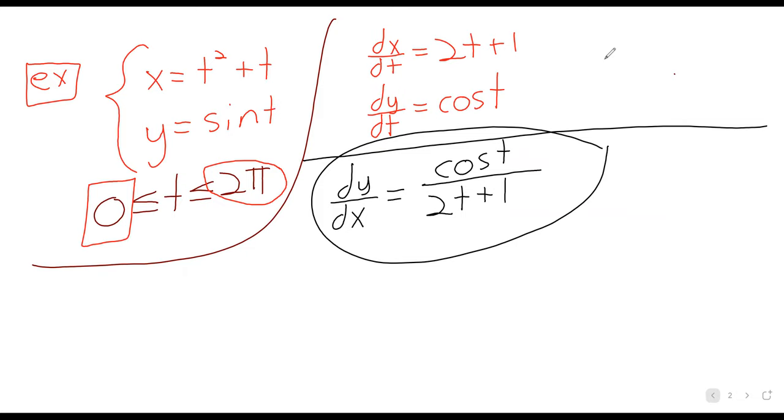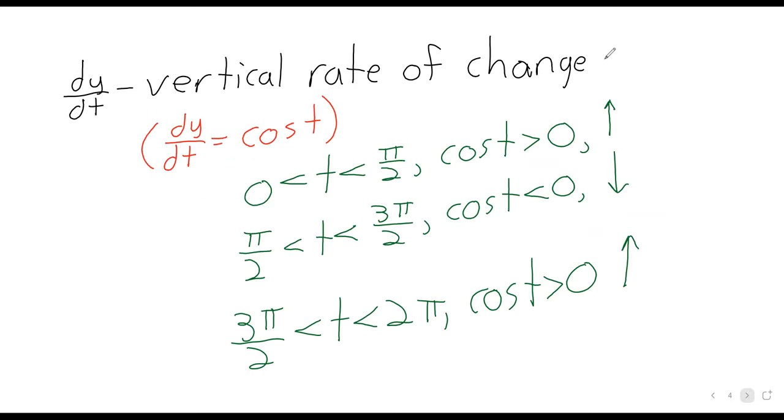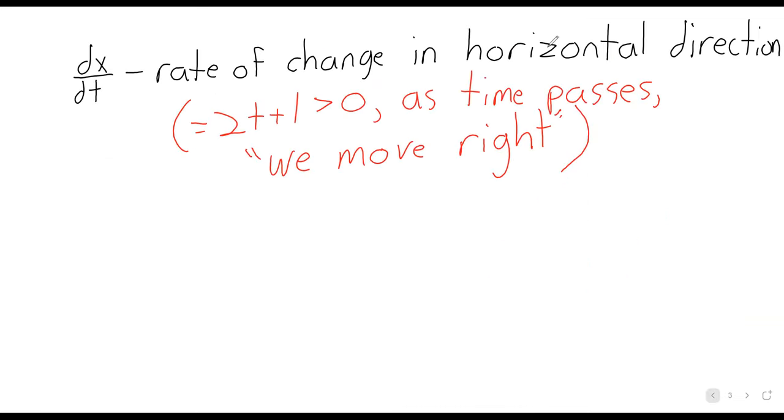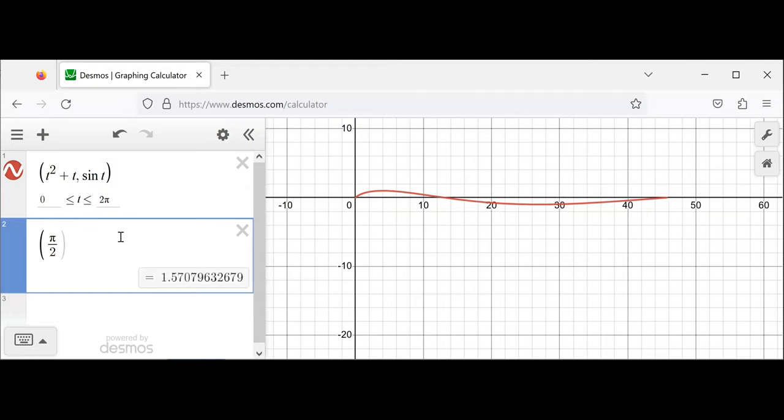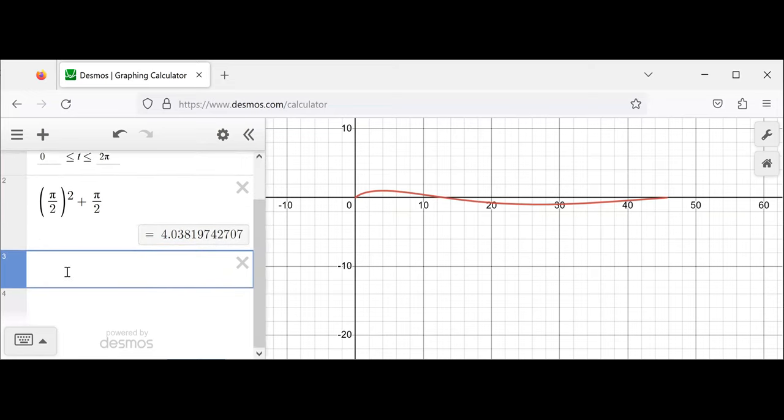If we know the maximum occurs at pi over 2 and we want to know the x-y coordinates for that, well, the y is 1. The sine of pi over 2 is 1. The x-coordinate is going to be some awful decimal. Pi over 2 squared plus pi over 2. And Desmos does double as a calculator when necessary. So 4.038. And let's check. 4.038 comma 1. Yup. This is indeed where the maximum of this curve occurs.